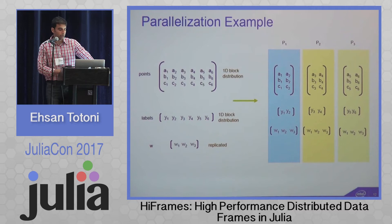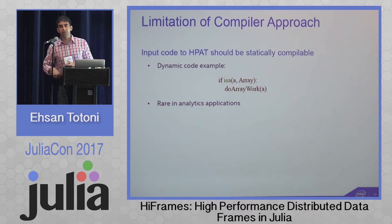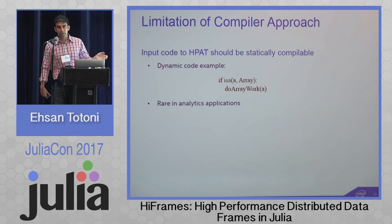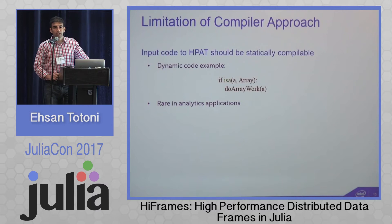The limitation of this compiler approach is that input to HPAT must be statically compilable. If you write dynamic code where a variable could have different types at runtime, the compiler cannot analyze and parallelize the program. However, this is quite rare in analytics, and the Julia community is very good at writing type-stable code, so in practice this is not an issue.